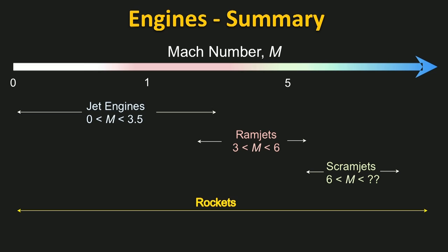Let's finish by summarising the engines and their operating regimes. Jet engines can operate from zero speed up to around 3.5 times the speed of sound. Ramjets are good for around Mach 3 to Mach 6. And then scramjets are suitable for the higher hypersonic Mach numbers. We're still not sure how far we can push into the hypersonic regime with scramjets.